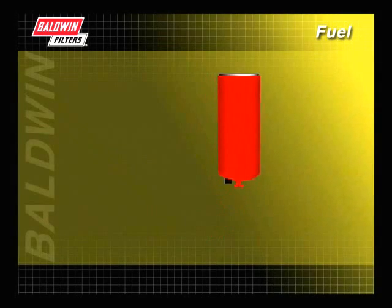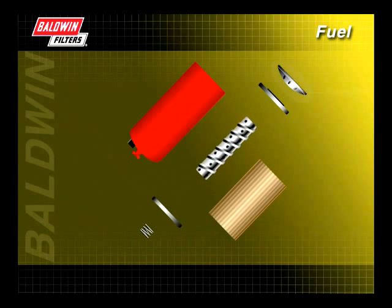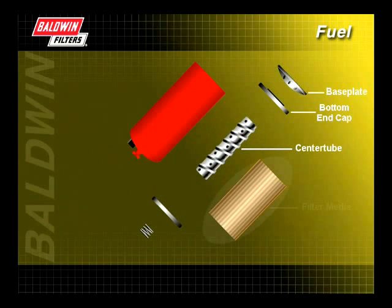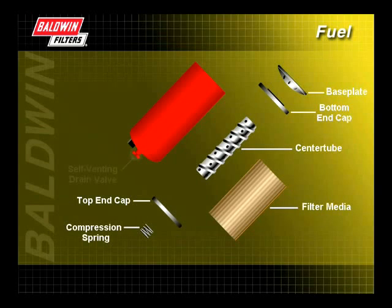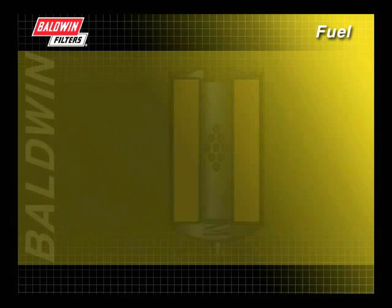To better understand how a fuel filter and fuel-water separator works, let's take a look at the components of a typical heavy-duty fuel-water separator. The primary components are a base plate assembly, a bottom-end cap, a center tube, the filter media, a top-end cap, a compression spring, a self-venting drain valve, and the canister. Some fuel-water separators contain a water sensor port for the use of an electronic water-in-fuel sensor.